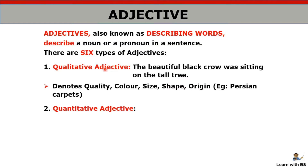Always notice that adjective comes before the noun. 'Tall tree' — tree is the noun, and 'tall' comes before it because it is giving additional information about the noun. 'Beautiful black crow' — two adjectives, 'beautiful' and 'black', are placed before the noun 'crow'. So words which come just before the noun and give more information about it are qualitative adjectives.